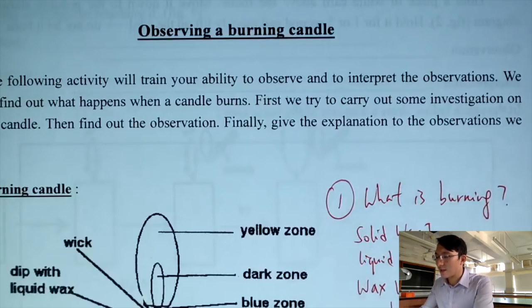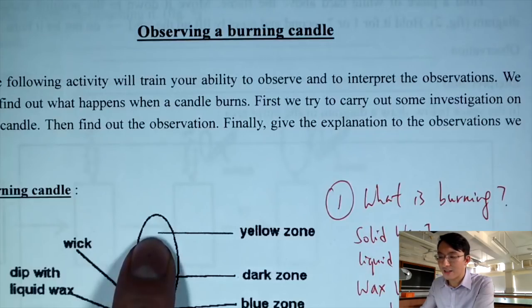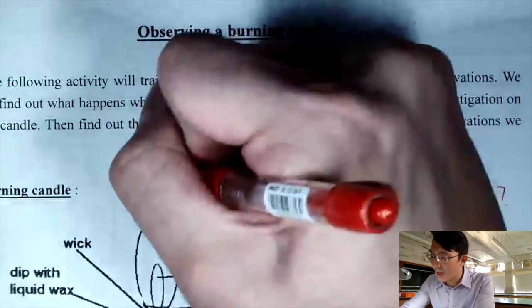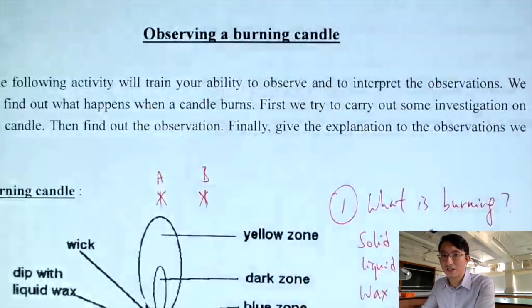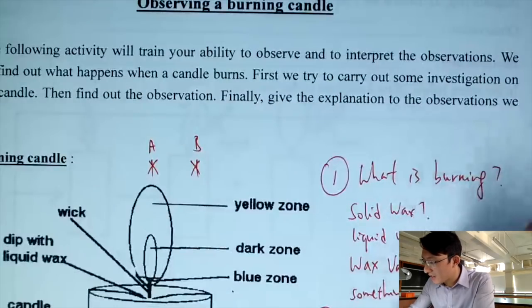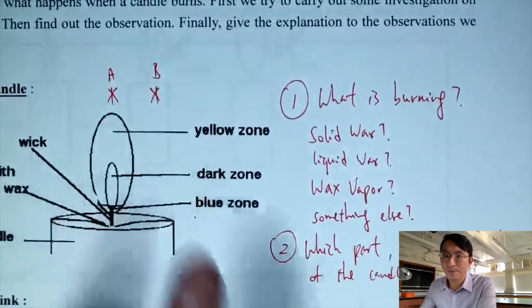The second question is, you see the flame here. I want to ask: is it hotter at the inside of the flame or hotter on the outside of the flame? So basically, is it hotter here (A) or hotter here (B)? Which part is hotter — inside or outside of the candle flame? Is it A or B?